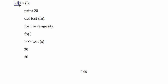Here a function x is defined. This function will print 20. Another function is defined, its name is test and one argument is there, fn. For i in range 4, fn function. Then test function is called and argument is passed x.